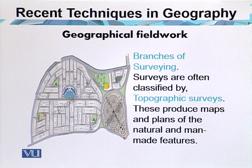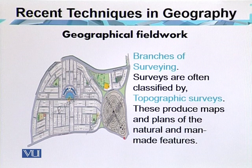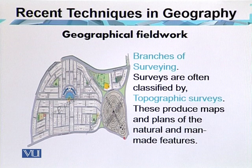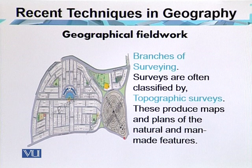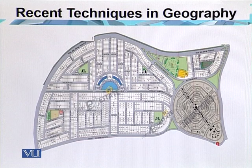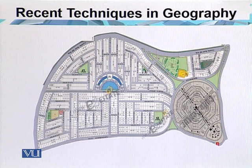The accuracy of surveying depends upon the purpose for which the survey is being undertaken, and the survey is controlled by the accuracy of the figures. Surveys are often classified by type; in topographical surveys, maps and plans of natural and man-made features are produced. Here we have a map of Kaluni, which is made by private property dealers, representing an area where town planning takes place.